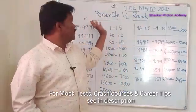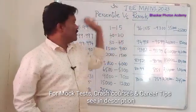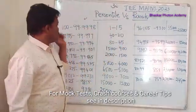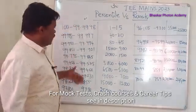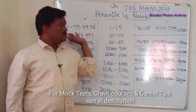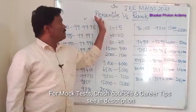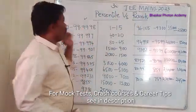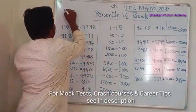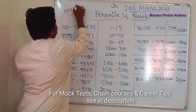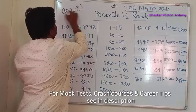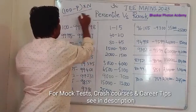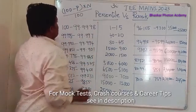Now let us look at percentile versus rank. Basically there is a formula — an expected percentile versus rank converter. The formula is: (100 minus P), where P is the percentile, multiplied by the number of candidates who appeared, divided by 100.